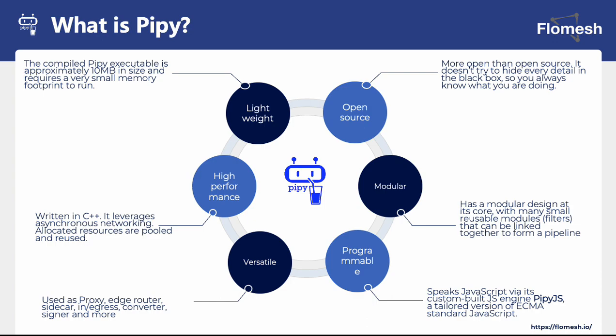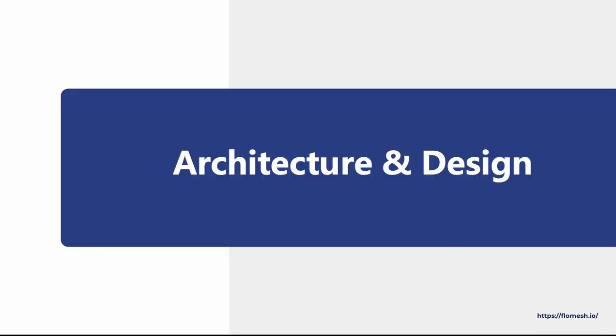Pype comes with its own built-in custom JavaScript engine called Pype.js, which has no garbage collection overhead and implements a subset of the ECMA standard. Pype provides a range of pluggable building blocks, also known as filters, which can be chained together in any fashion to build a pipeline. I'll be talking about pipelines and filters in the next slides. Pype is fully open source and all the source code is available on the GitHub repository.